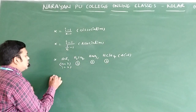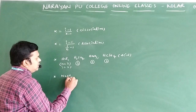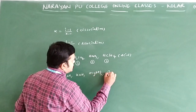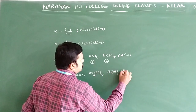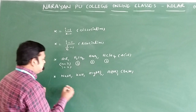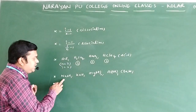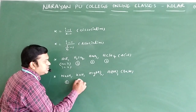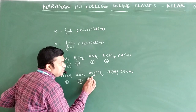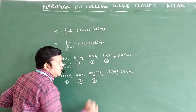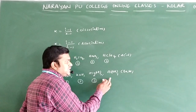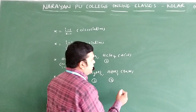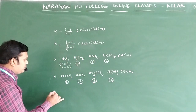For bases: NaOH dissociates to Na⁺ + OH⁻, giving 2 ions so i = 2. KOH similarly gives i = 2. Mg(OH)₂ dissociates to Mg²⁺ + 2OH⁻, giving 3 ions so i = 3. Al(OH)₃ dissociates to Al³⁺ + 3OH⁻, giving 4 ions so i = 4. These are examples of bases.